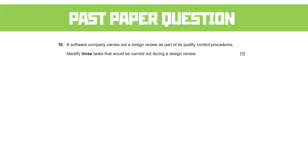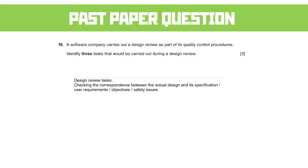Let's take a look at the past paper questions. A software company carries out a design review as part of its quality control process. Identify three tasks that will be carried out during a design review. For three marks we need three clear points. You may check the correspondence between the actual design and its specification, the user requirements, the objectives, or the safety issues.